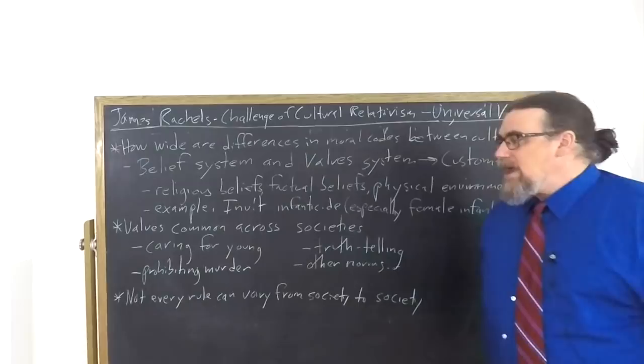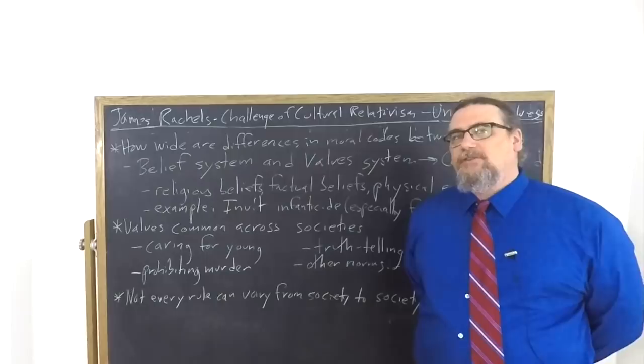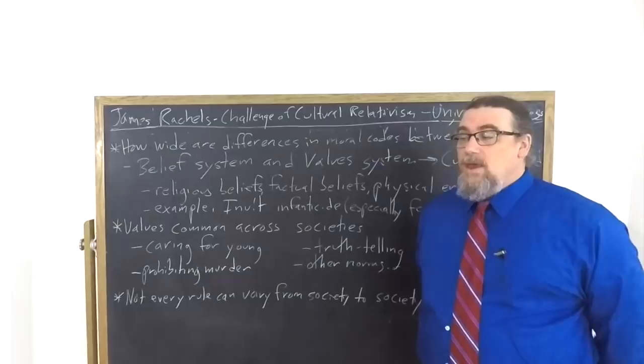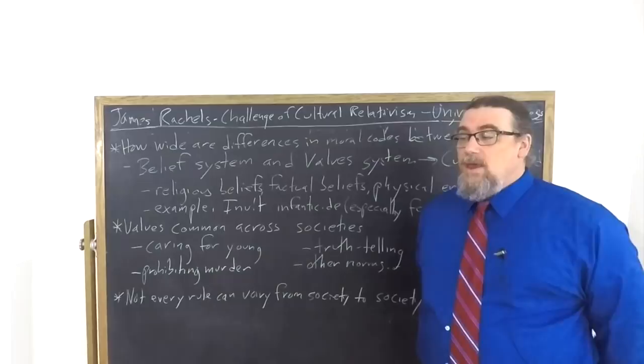So he concludes, not every rule can vary from society to society. Again, this stance is called soft universalism, and it is a way of undercutting one of the central tenets of cultural relativism, which is that everything is completely different from one moral code to another, from one culture or one society to another.